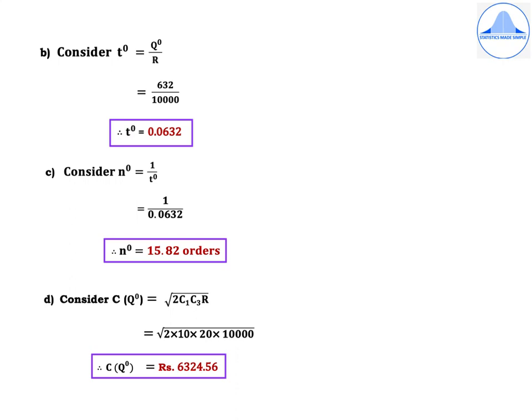Optimum time between orders: T⁰ = Q⁰ / R = 632 / 10,000 = 0.0632 years. Optimum number of orders: N⁰ = 1 / T⁰ = 1 / 0.0632 = 15.82 orders. Optimal annual cost: C(Q⁰) = √(2C₁C₃R) = √(2 × 10 × 200 × 10,000) = Rs.6324.56.